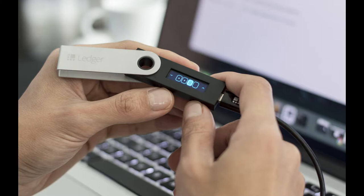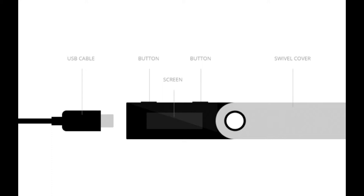Alright, now let's get started. First, open up the box and get comfortable with the hardware. There are basically four main parts you should know about. The screen — this is where the action is; it's small but contains almost every piece of important information, including addresses and manuals. The left button navigates you to the left and up in the vertical menu. The right button moves you right in horizontal menus and down in vertical menus. A swivel cover is a sleek cover to the wallet. Note that tapping both buttons at the same time is equivalent to hitting enter or confirm.